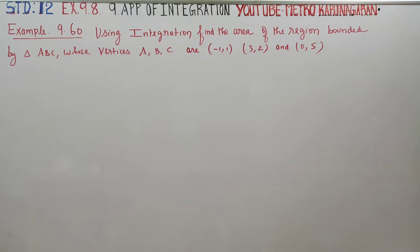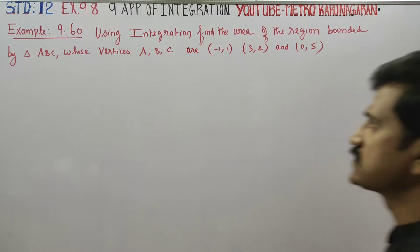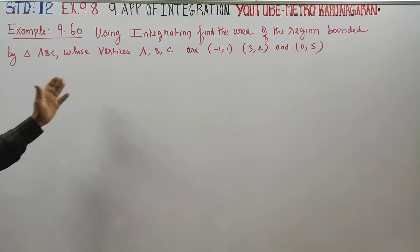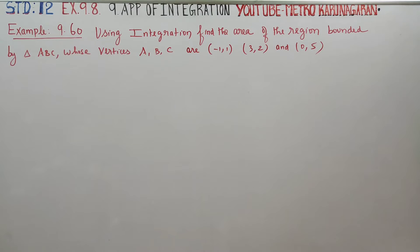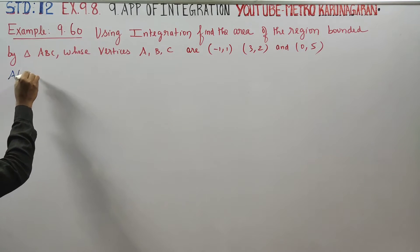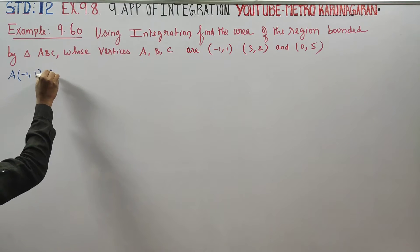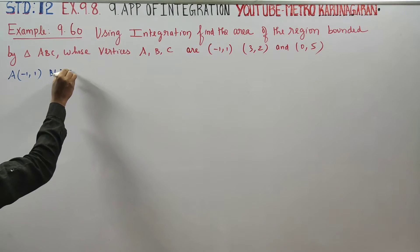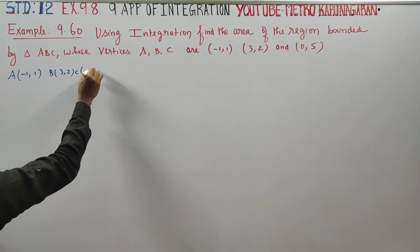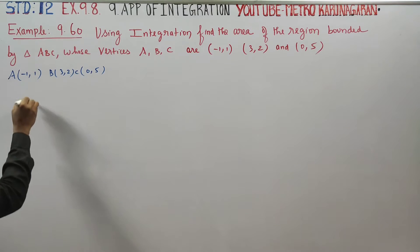Hello students, I am Etrukkar Nagran. In example 9.60, using integration, you have to find the area of the region bounded by the triangle whose vertices are given: A equals (-1, 1), B equals (3, 2), C equals (0, 5).